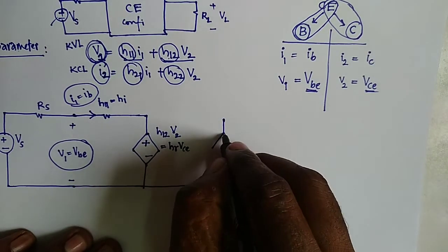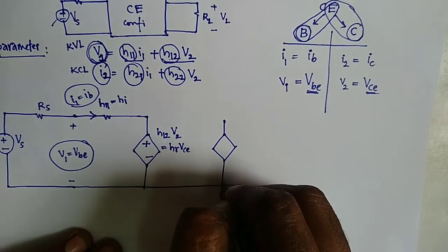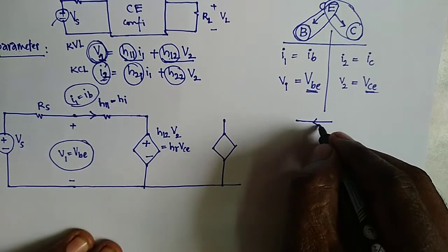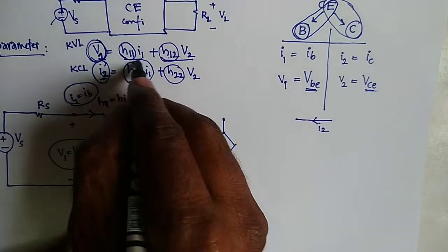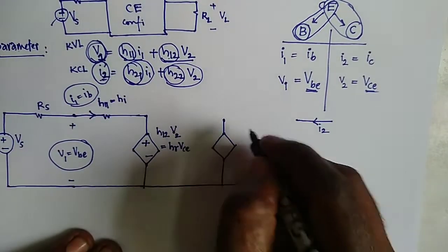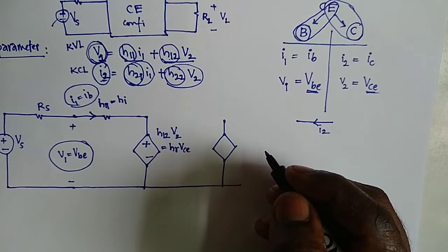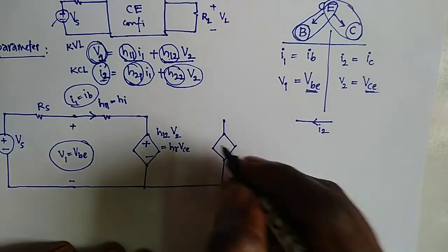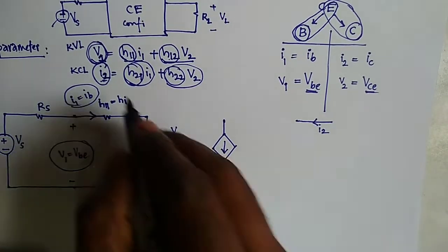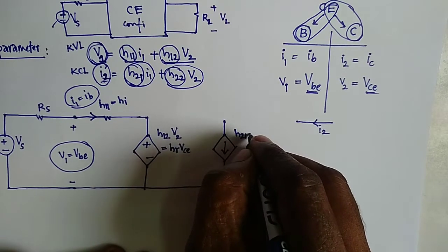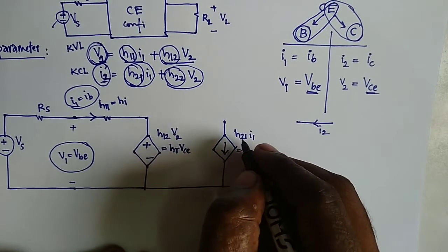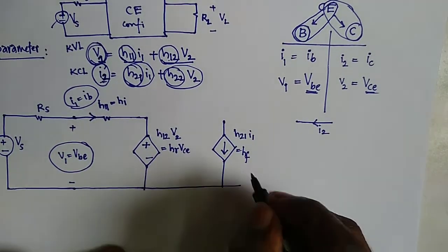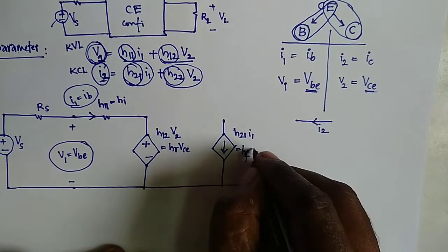At the output port we have current I2. These two currents are in parallel, so applying KCL — the algebraic sum of incoming currents equals the algebraic sum of outgoing currents. The current source is H21·I1. H21 = I2/I1 is the forward current gain, and H21 is replaced by HF, with I1 equal to IB.